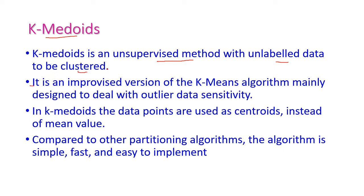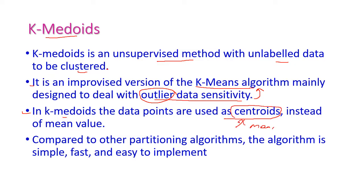K-medoids is an improved version of the k-means algorithm, mainly designed to deal with outlier data sensitivity. The disadvantage of k-means is that it is very much sensitive to outliers. To overcome that, we can use k-medoids, where data points themselves are used as medoids. Instead of a mean value, the actual data point is used as the center of the cluster. This is the key difference between k-means and k-medoids.